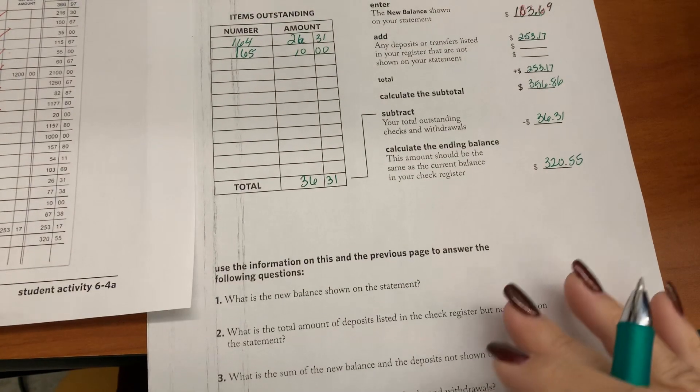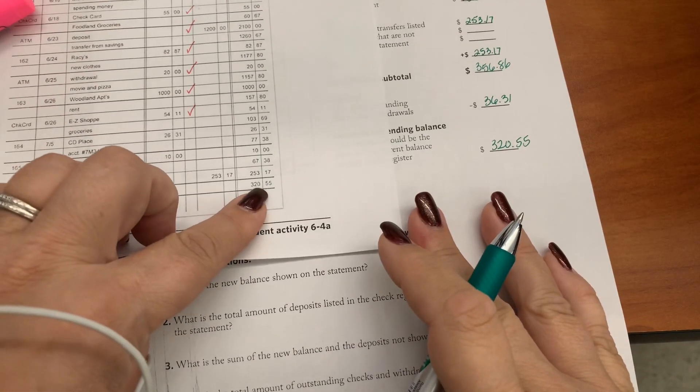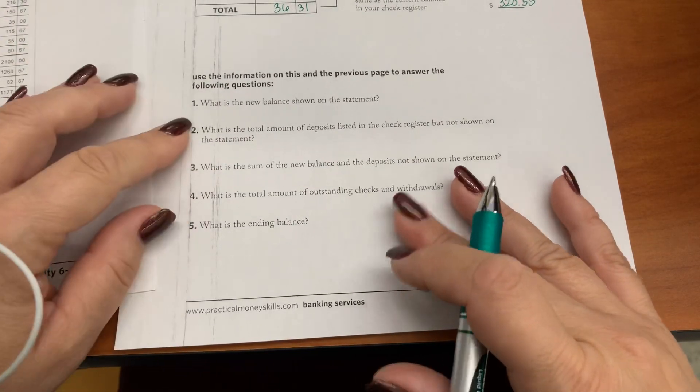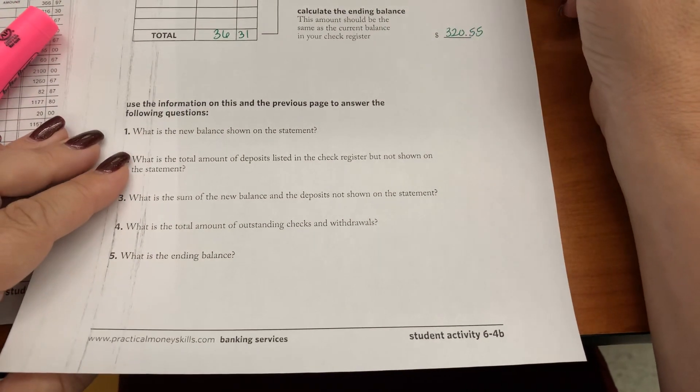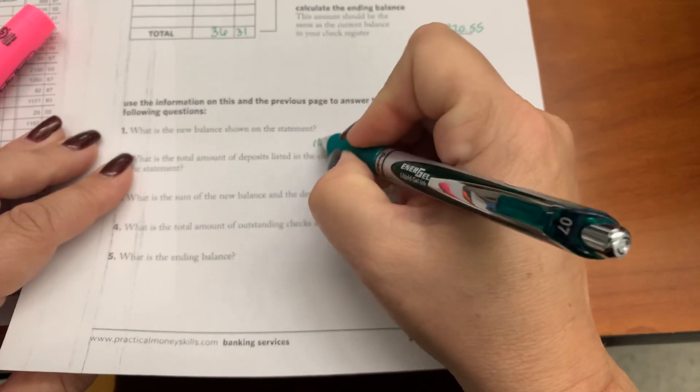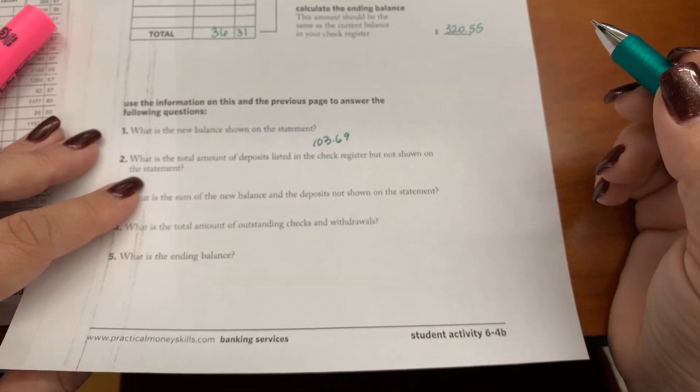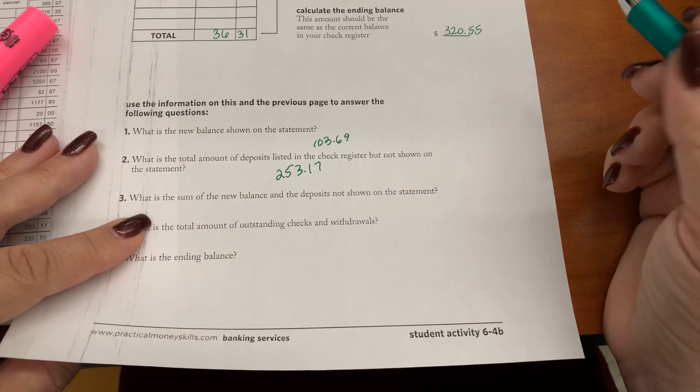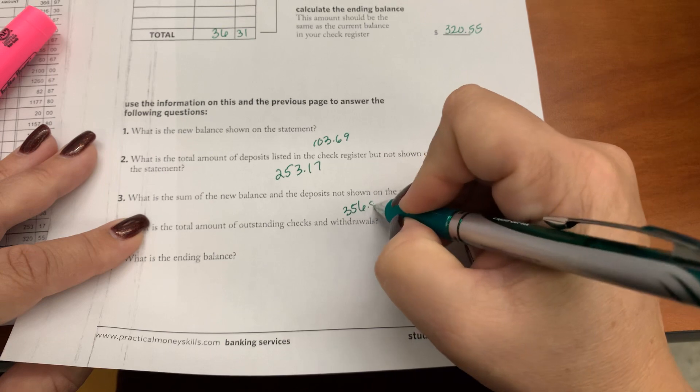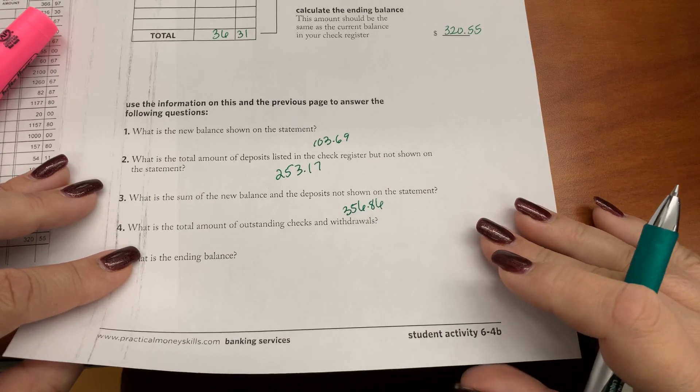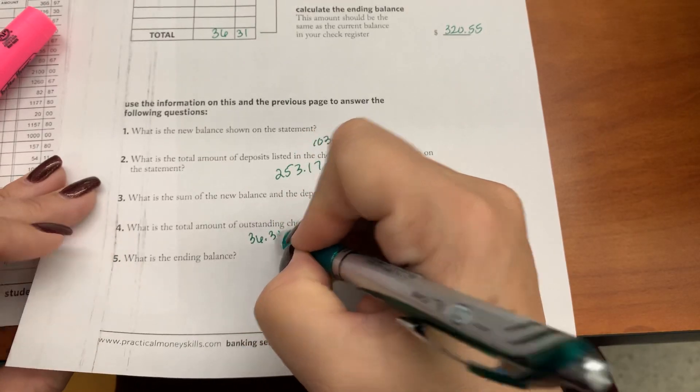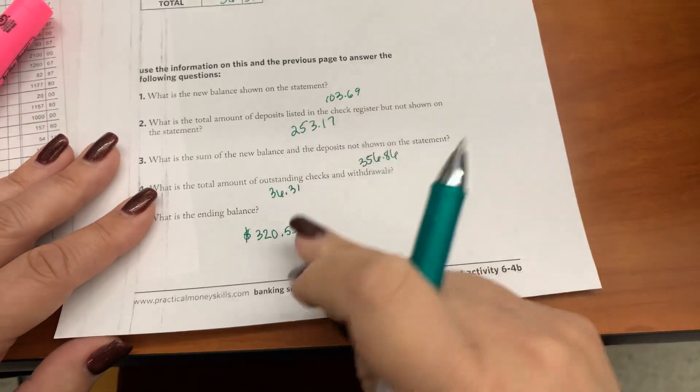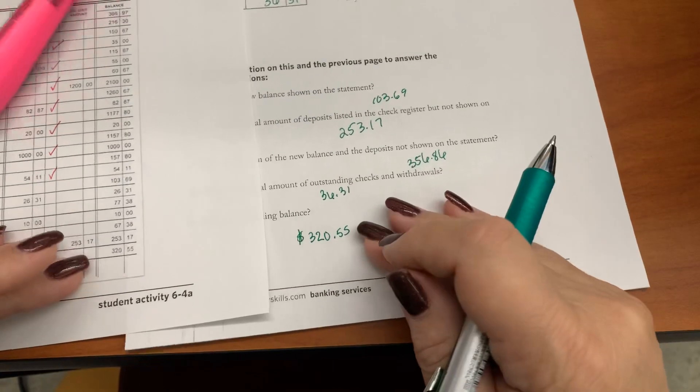Which should be the same as my running balance total at the end, $320.55. So my checkbook has matched. So what was the new balance? It was $103.69. What was the total amount of the deposit slips listed in the check register but not shown on the check? That was $253.17. What was the sum of the new total? That was $356.86. What is the total amount of outstanding checks and withdrawals? That was $36.31. And what was my ending balance? That was $320.55. And again since it matched my register's running balance, my checkbook has been reconciled.